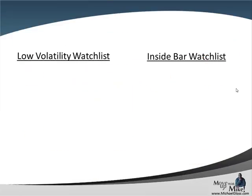As we come to our watch list for today, we have our low volatility watch list, which is our lateral time frame using Bollinger Bands. For that, we are going to be watching the dollar yen. And also for our inside bar watch list, we'll be watching the dollar yen as well.